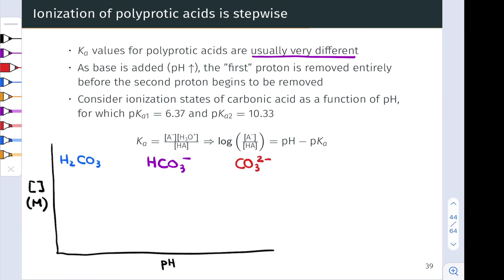If we follow the concentration as a function of pH for each of these species, we get a curve that looks like this, and those of you familiar with titration curves, these will start to look quite familiar.